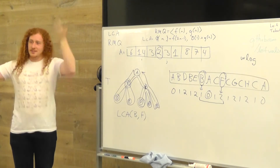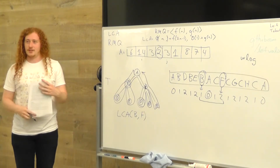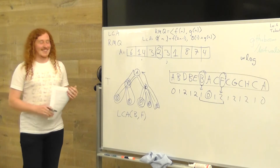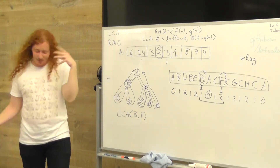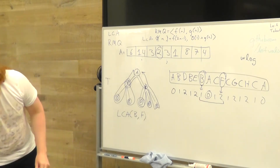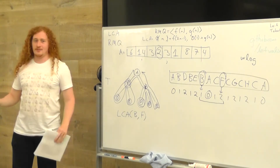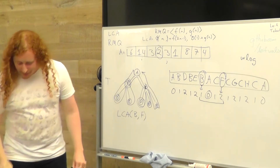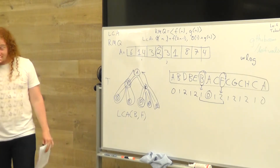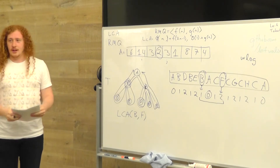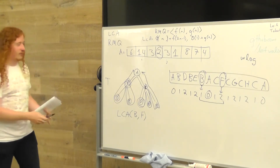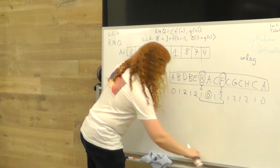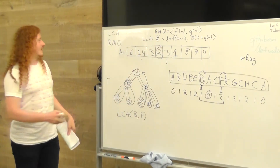Someone shout out how we could preprocess an array to answer RMQ. Really, really stupid easy — brute force. How do you preprocess a problem that has a finite input? Check all pairs. So we're going to preprocess this whole thing: every possible query and build a big table.